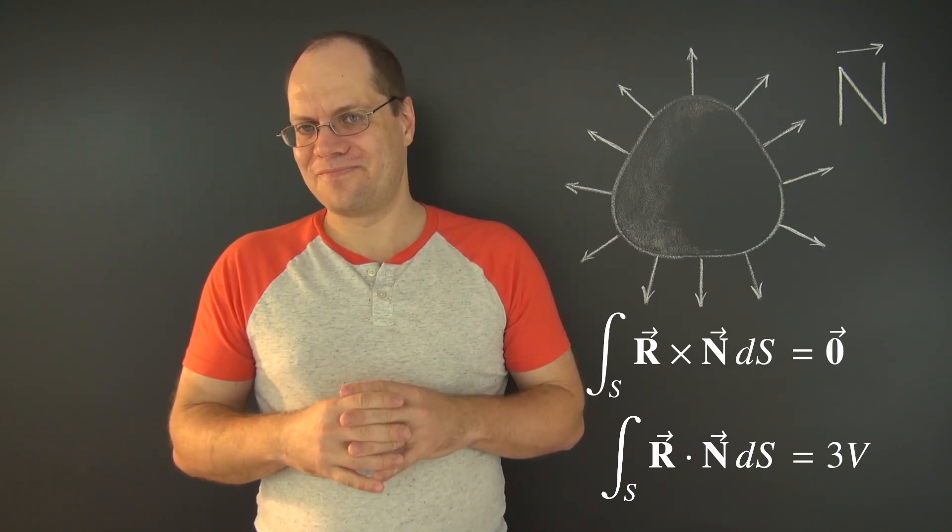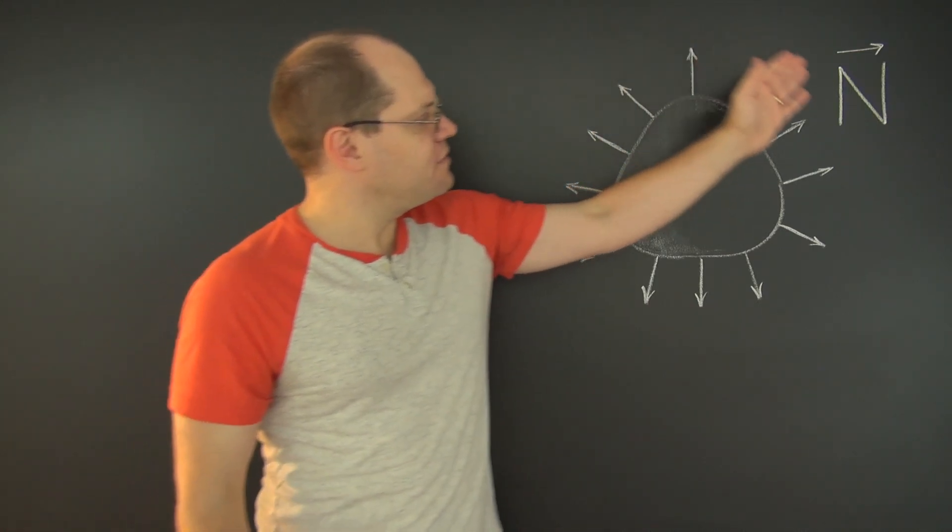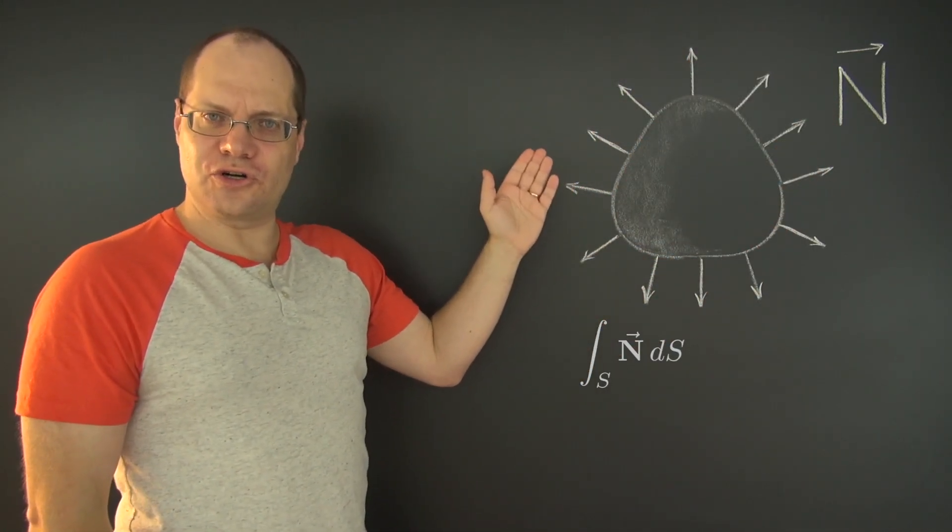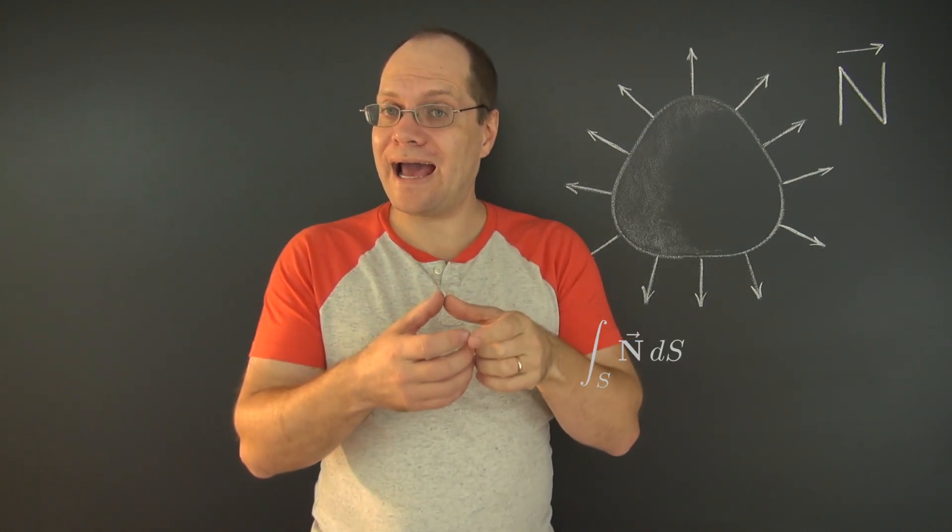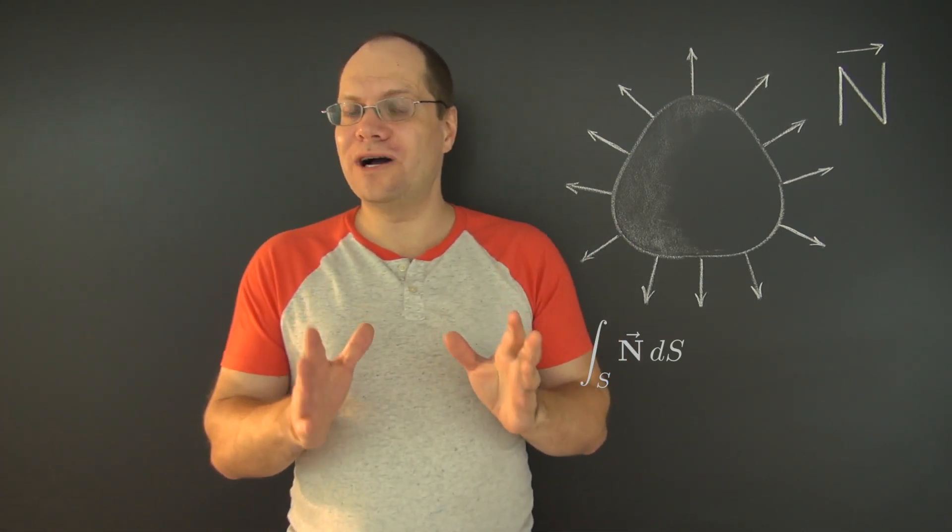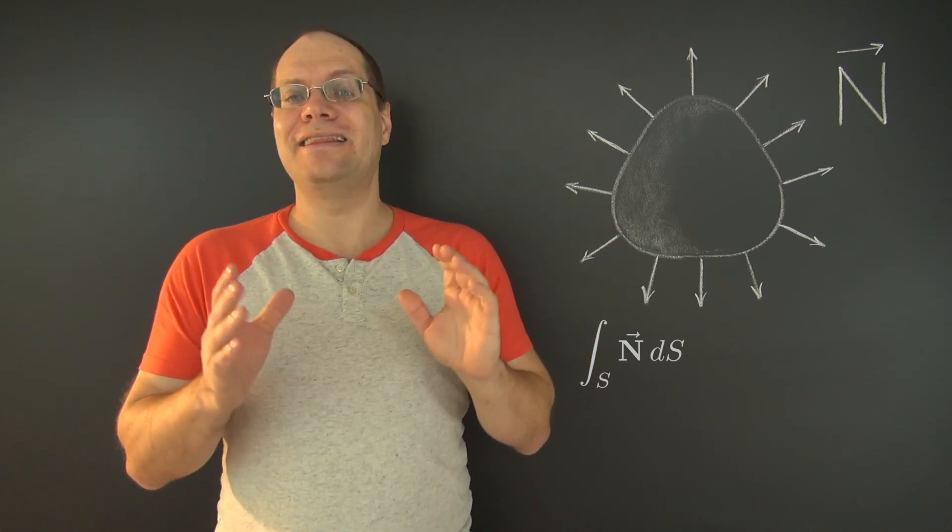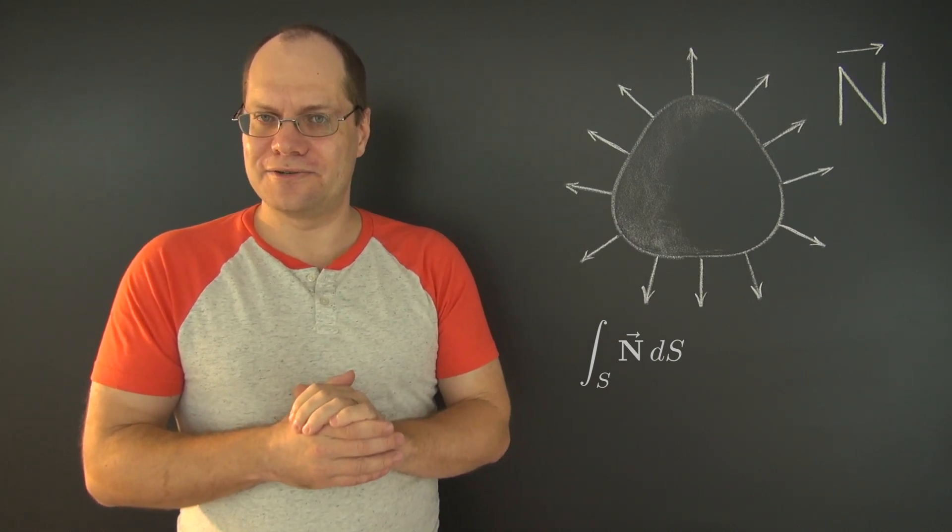And that integral equals three times the volume of the enclosed shape. Fascinating. However, what we're concerned with in this video is the integral of the unit normal, not over a closed surface, but over a patch with a contour boundary L. Now, I get only one shot at drawing this on the board, so let me take my time doing that, and then I'll reveal to you what the answer is.